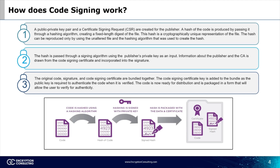The hash is passed through a signing algorithm using the publisher's private key as an input. Information about the publisher and the CA is drawn from the code signing certificate and incorporated into the signature. The original code, signature, and code signing certificate are bundled together. The code signing certificate key is added into the bundle, as the public key is required to authenticate the code when it is verified.